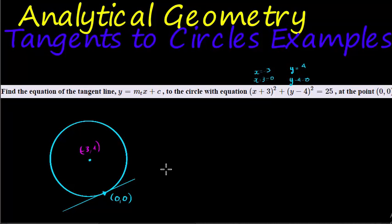So what we do from here is just find the gradient of the radius first, because once we have the gradient of the radius we can find the gradient of the tangent line. So the gradient of the radius equals the change in the y values, that is 4 minus 0, over the change in the x values, that's negative 3 minus 0. So the gradient of the radius is negative 4 over 3.